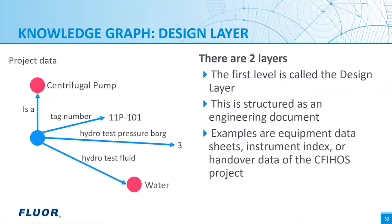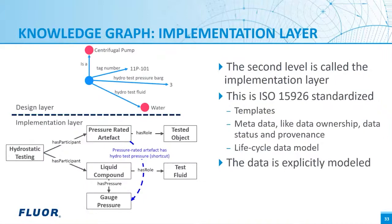Here is another knowledge graph model showing that the pump must be hydro-tested to make sure it does not leak under a certain pressure. The hydro test pressure is three bar gauge, which is just a number, and the test medium is water, which is a reference data class. The relationship terms 'hydro test pressure,' 'bar gauge,' and 'hydro test fluid' are the same as on an equipment data sheet — not terms standardized in ISO 15926 itself. This is the level that engineers work with — called the design layer — modeled just like data sheets, instrument indexes, or data as it is named on the CFIHOS data handover project.